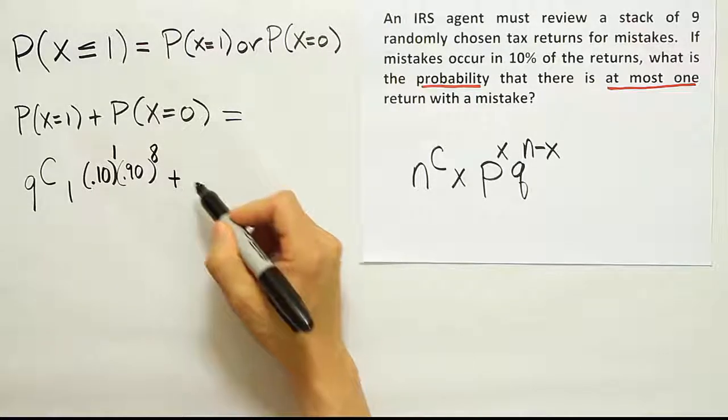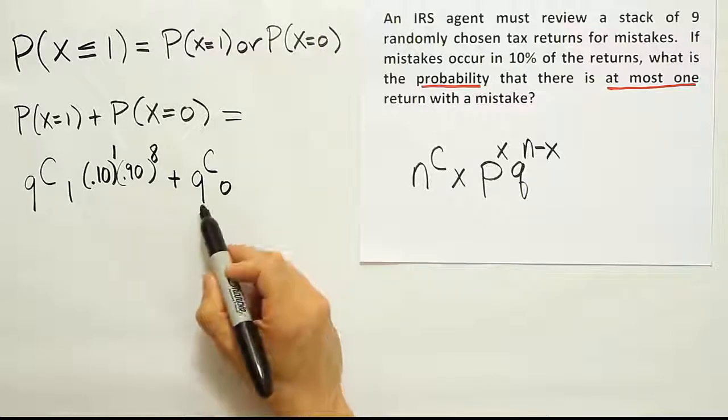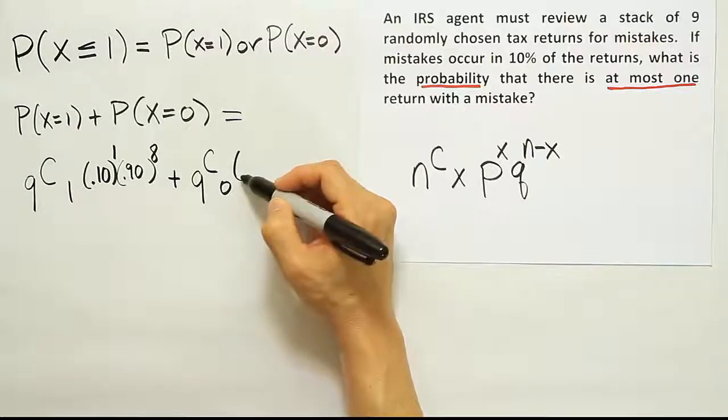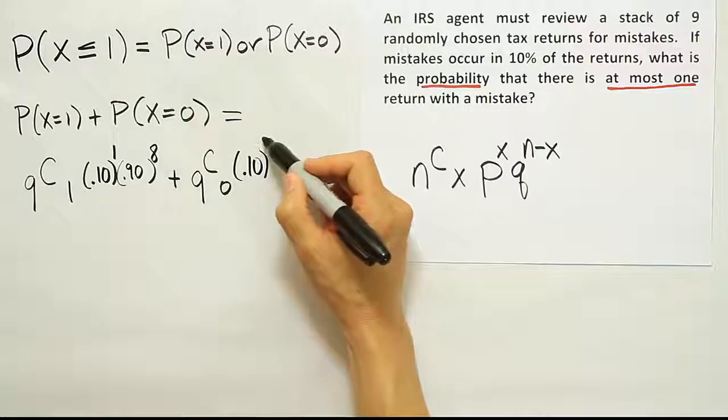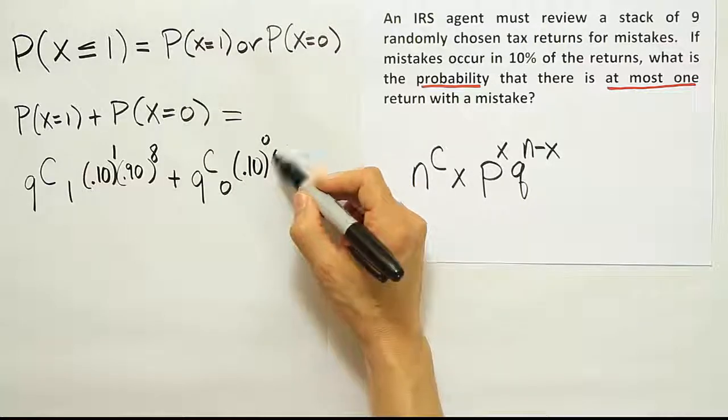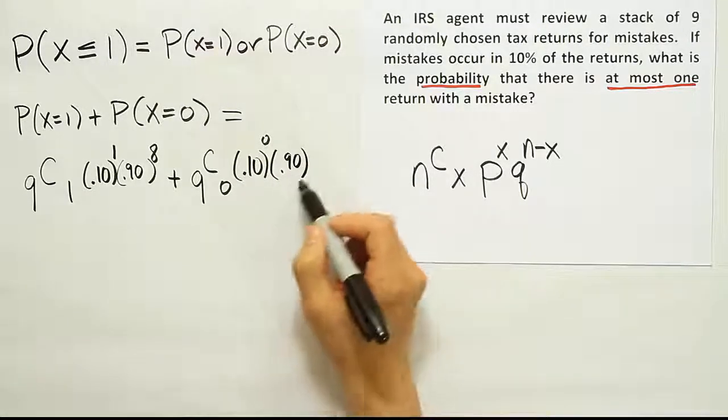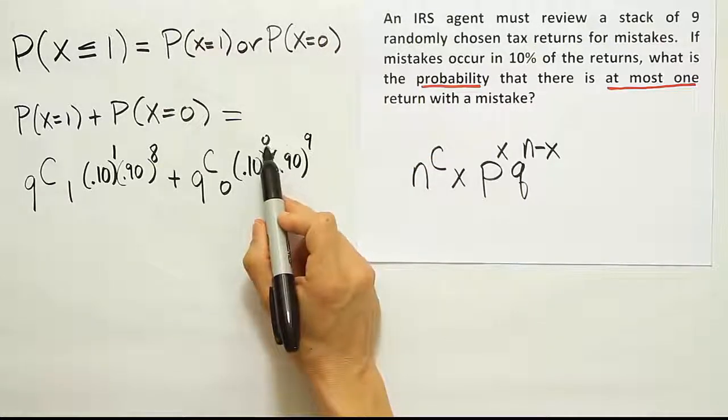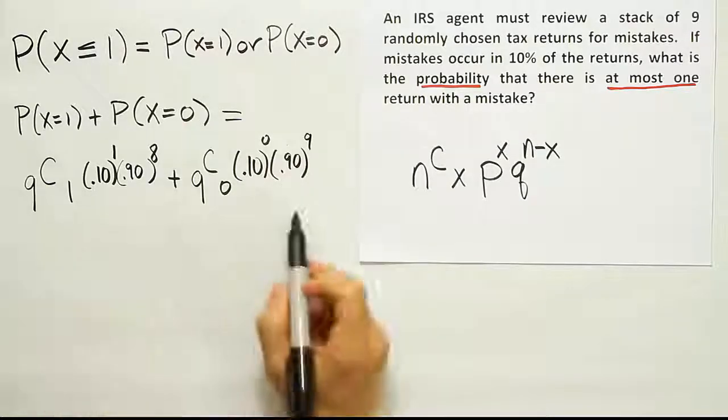And we're going to add to that nine choose zero. Out of nine returns, choose none of them to have a mistake. The probability that we have a mistake is 10%. If none of them are going to have a mistake, we'll raise that to the zero power. And the remaining 0.90 probability or 90%, that'll be all the remaining nine returns. If none of them are going to have a mistake, the other nine will be good. So that's our formula filled out.